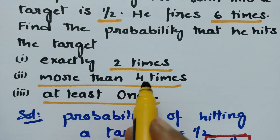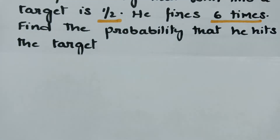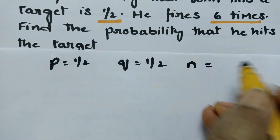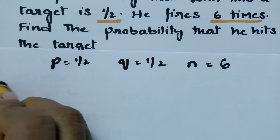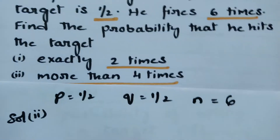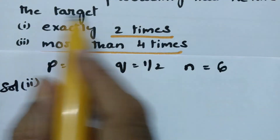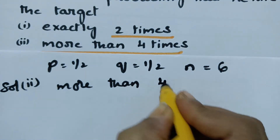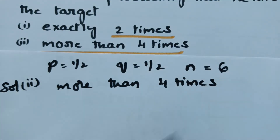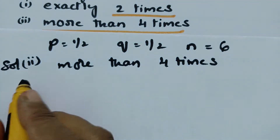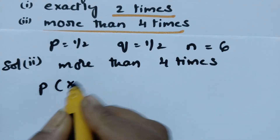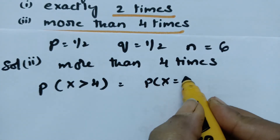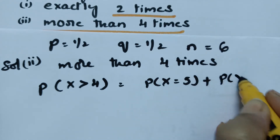The next question is more than 4 times — Solution 2. P equals half, Q equals half, n equals 6. The probability that John hits the target more than 4 times means P(X > 4), which equals the probability of X equals 5 plus the probability of X equals 6.